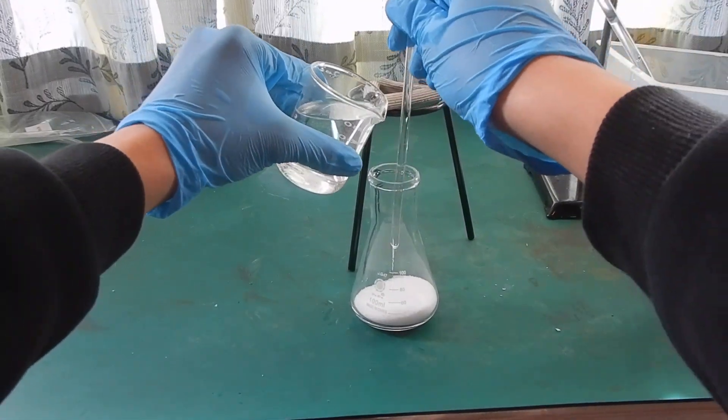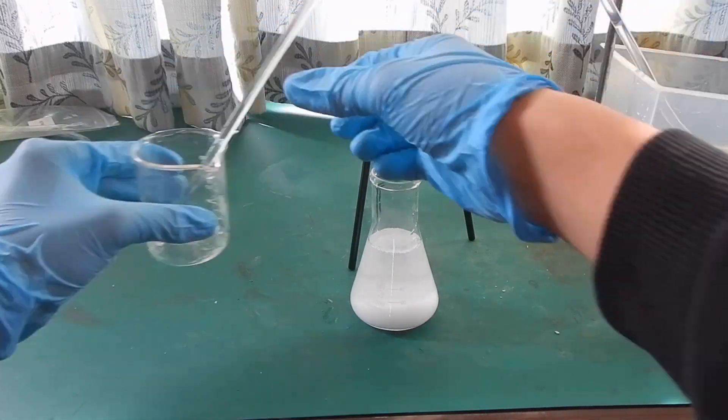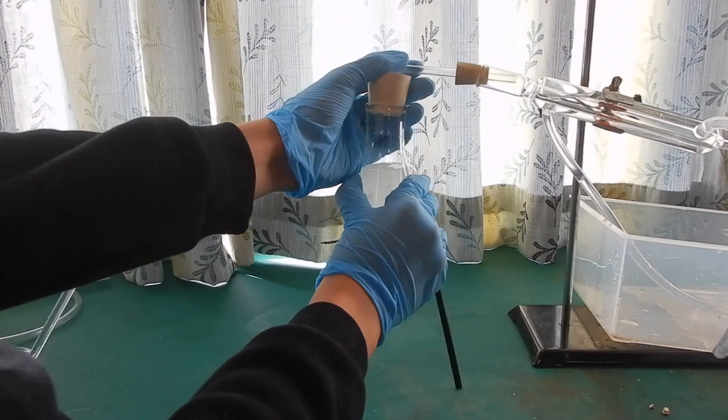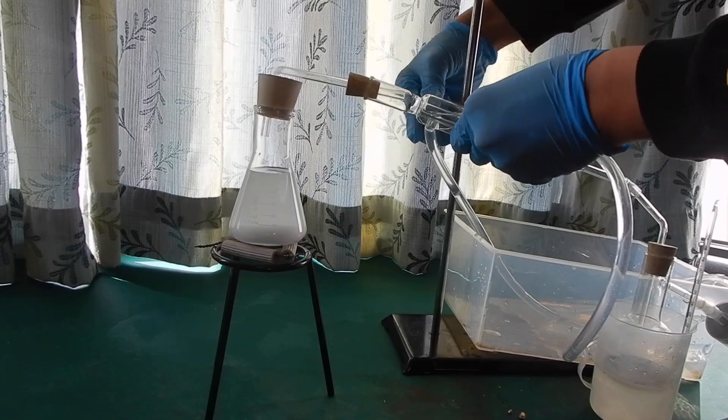Now we are ready to start the reaction. Pour the sodium bisulfate solution into the conical flask with the sodium chloride inside, and seal the apparatus tightly. We are now ready to begin our heating process.